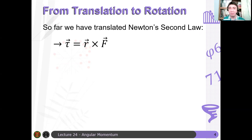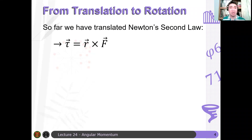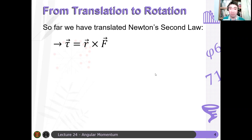You may ask: remember, our force is related to another physical quantity, which is linear momentum. The question is, is there a rotational analog for linear momentum? Well, there's nothing stopping us from defining it as r cross p, where p is the linear momentum vector.